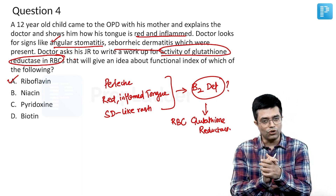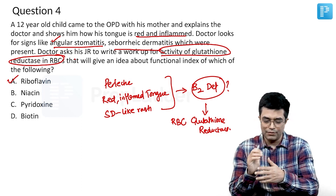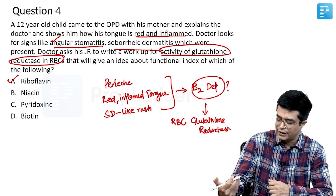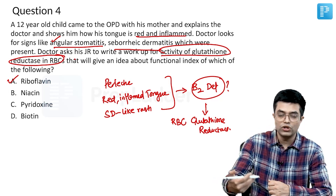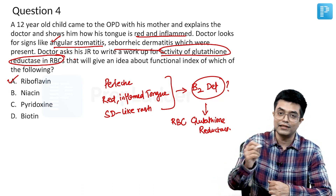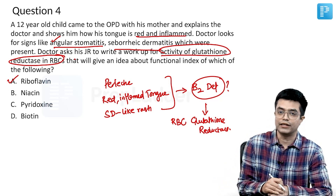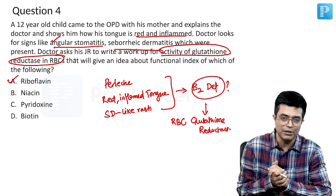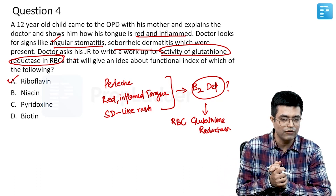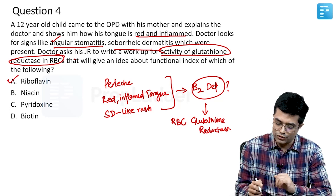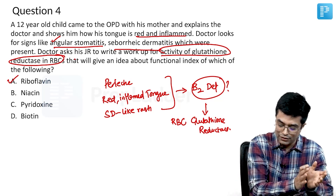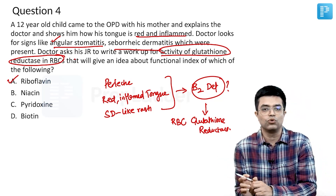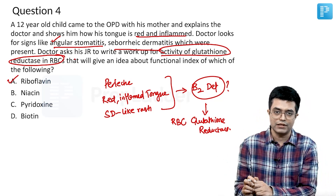B2 is involved in redox reactions and is an important component. It is involved in glutathione reductase as well as xanthine oxidase activity. These enzyme activities will be reduced in riboflavin deficiency, so you can proceed with clinical analysis along with checking the activity of glutathione reductase at the RBC level.